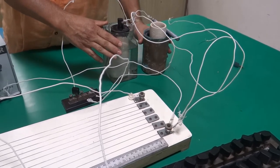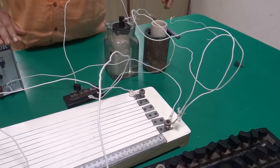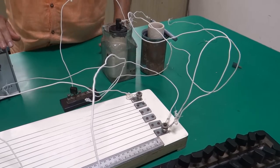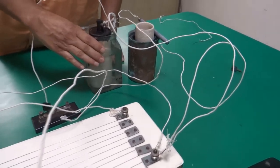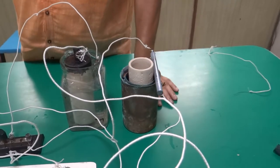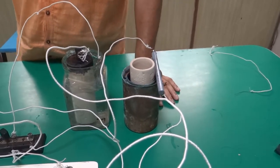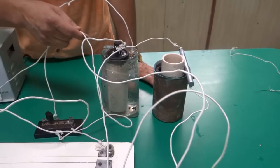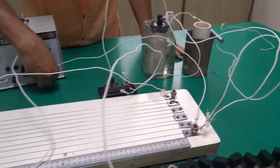This is the Leclanche cell. This is the Daniel cell. Negative electrode is zinc in both. It has electrolyte as NH4Cl. In this case, electrolyte is dilute sulfuric acid.